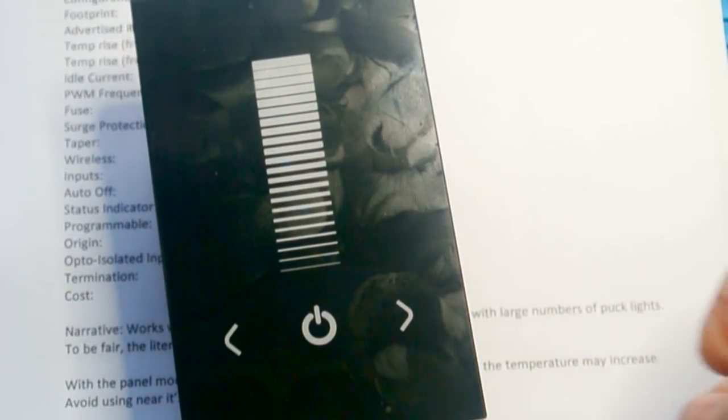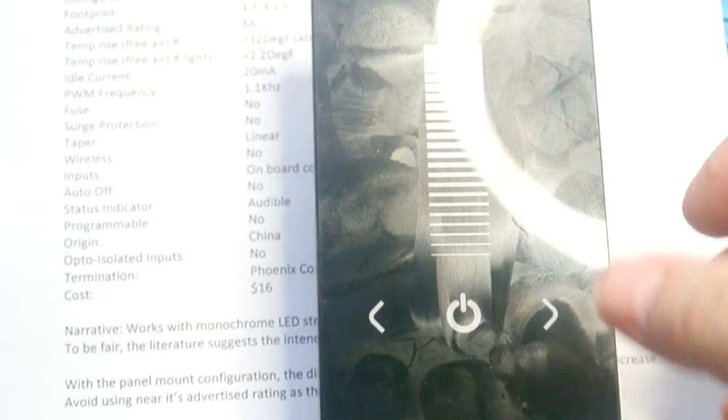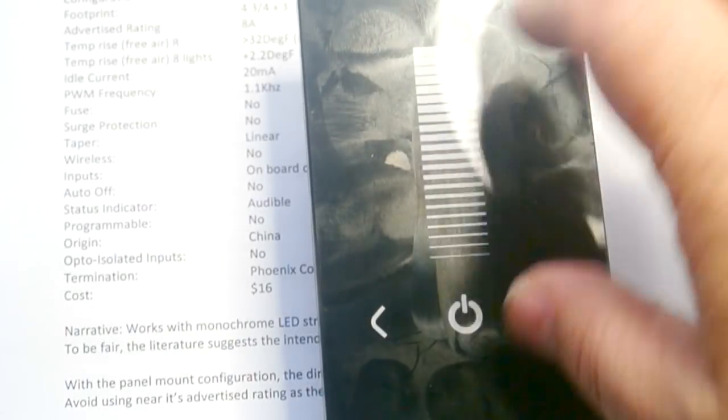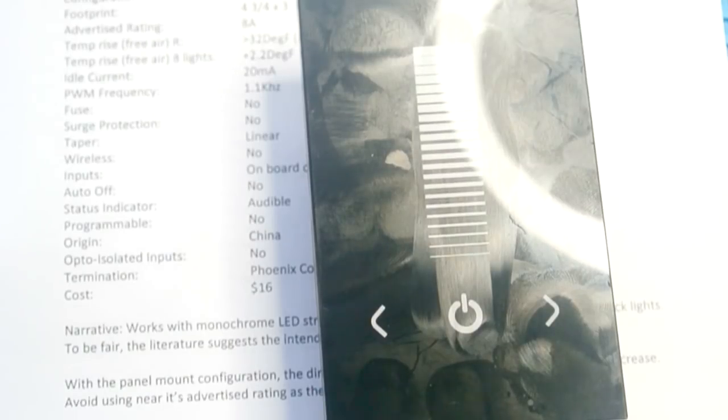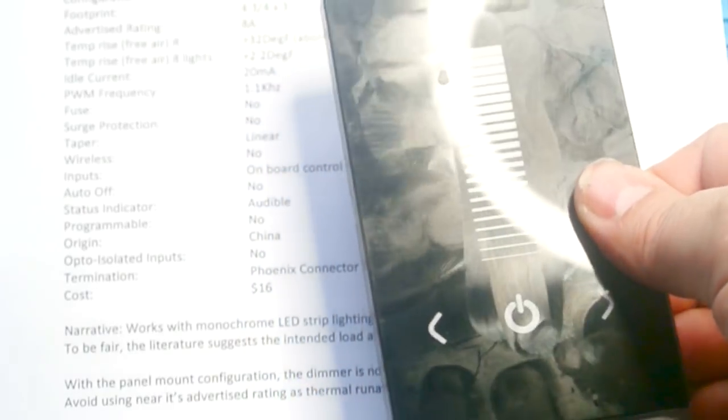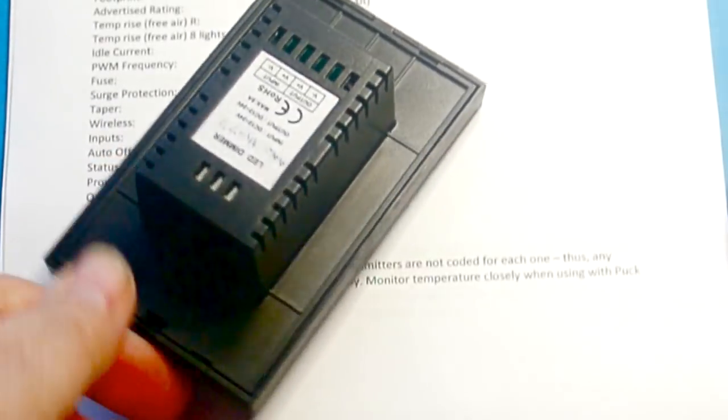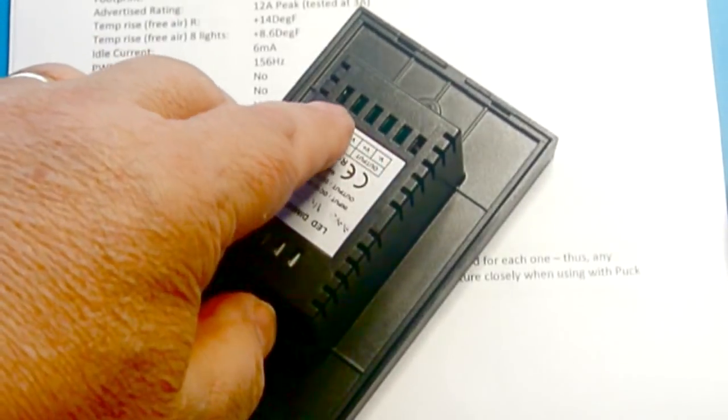And this is a generic slide dimmer. And it has a touch panel on the front. For that reason, it must be on all the time. It has about a 20mA idle current, which is starting to get a little bit significant. The rest of them aren't as significant as this. PWM frequency is 1.1 kHz. It's a low-side dimmer, made in China. And it has a set of terminals on the back.